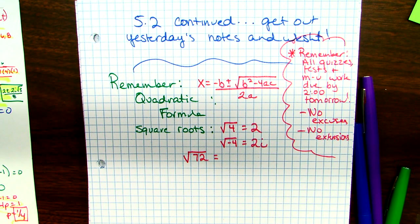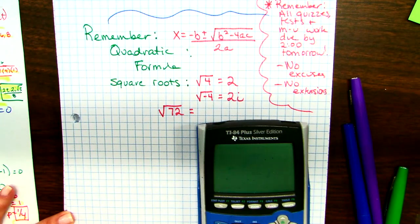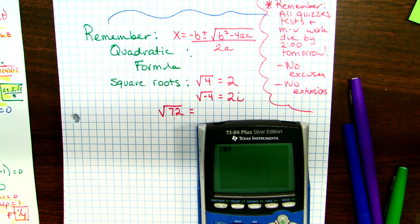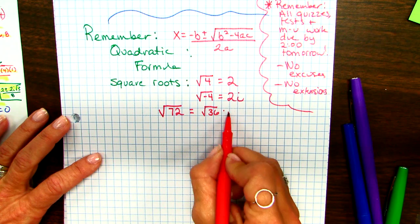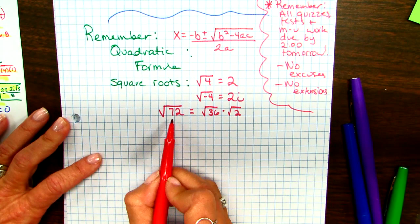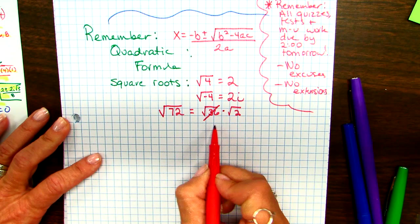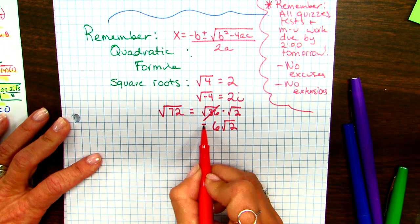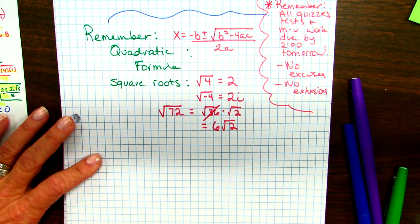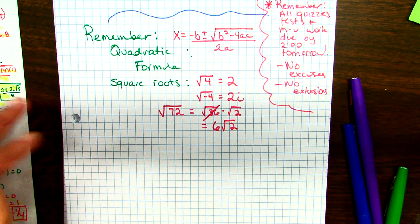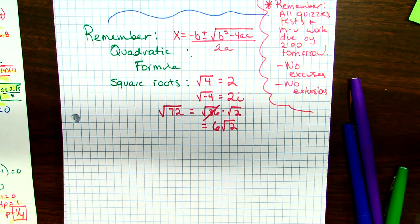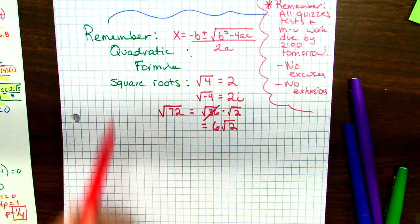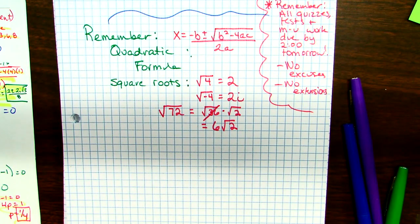Okay, so a negative under a radical shouldn't be scary. And then one last thing I wanted to remind you of is sometimes you can simplify a radical. It may not be a perfect square. And you might remember we would pick up our calculator and start dividing 72 by perfect squares. And 72 is 36 times 2. 72 is the square root of 36 times the square root of 2. 36 is 6, and then you have the square root of 2 left over. So we're bringing back a bunch of oldies. And you guys know that in math, everything comes back to haunt us.